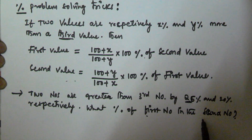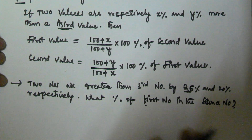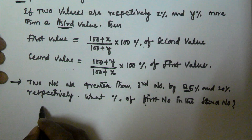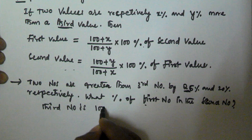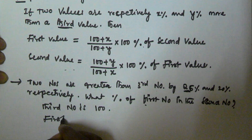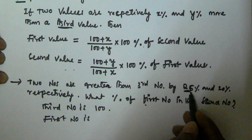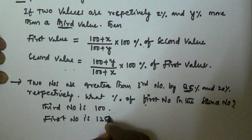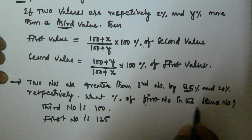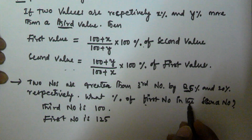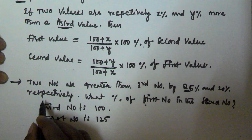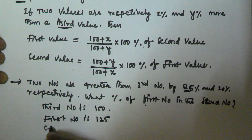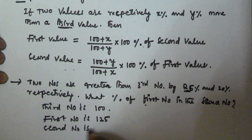So, what percentage of the first number is the second number? Let us assume that the third number is 100. The first number is 25% more, so the first number is 125. The second number is 20% more, so the second number is 120.